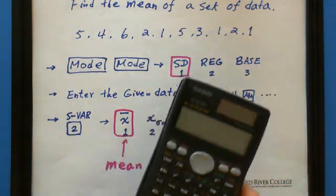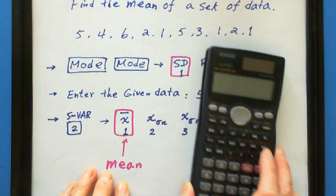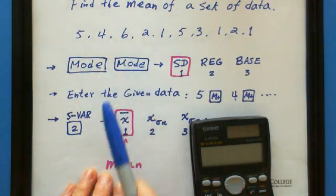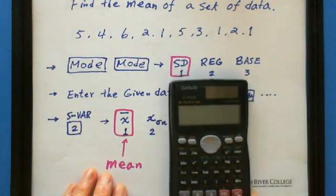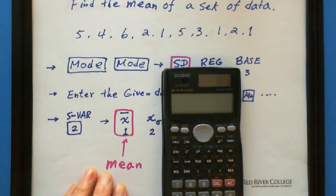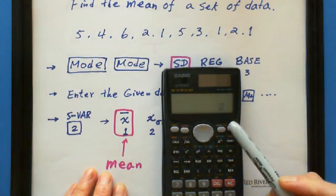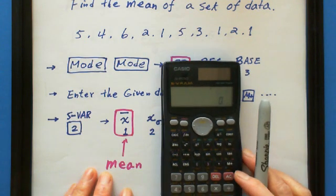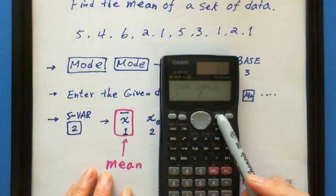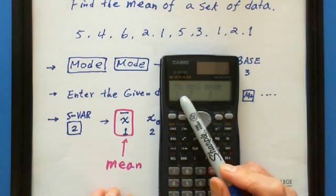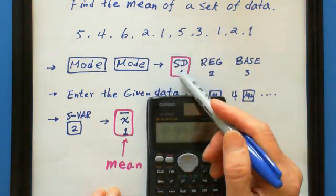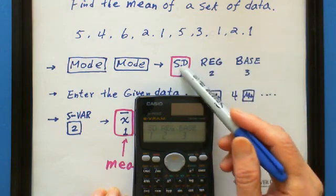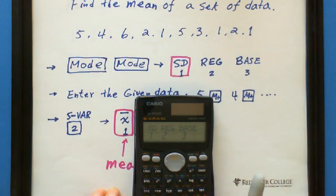So first of all we use the mode button. Hit the mode twice so you can see this one. Here is the mode, here is SD. So let's go to SD, you can see SD, REG, base. So we choose one.